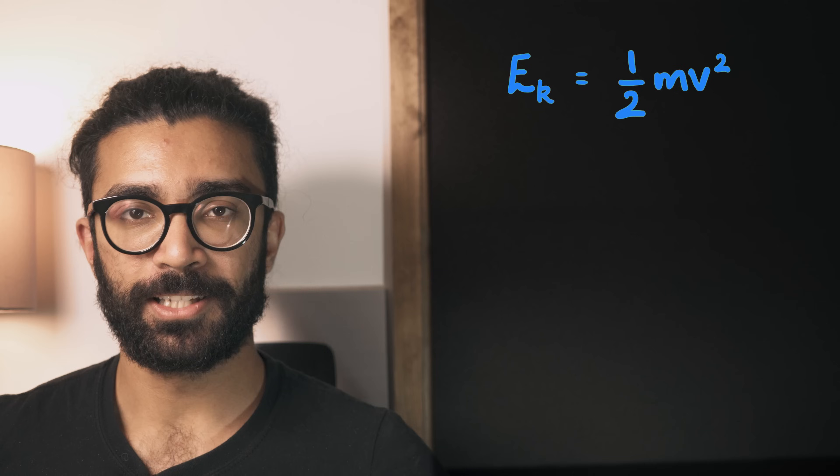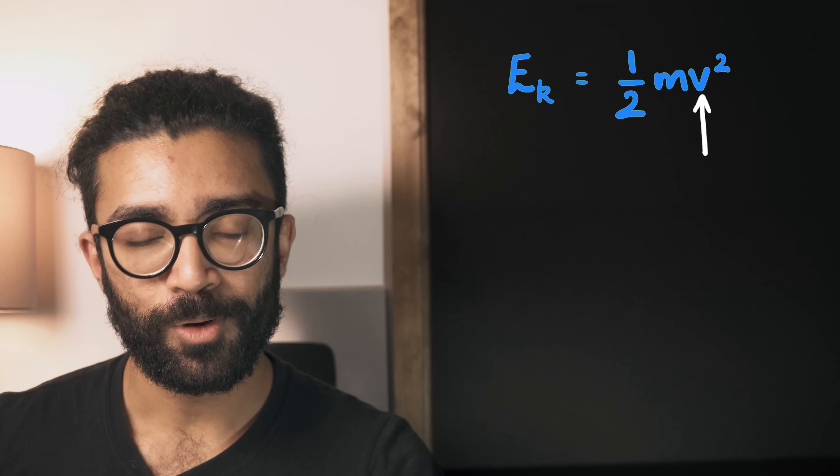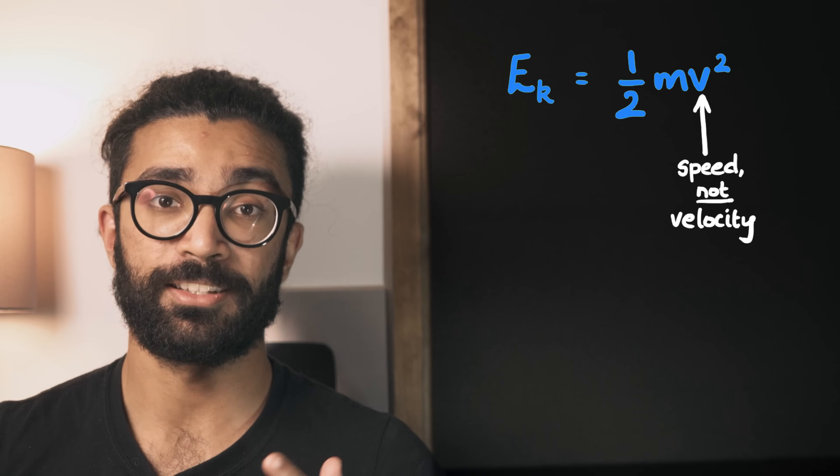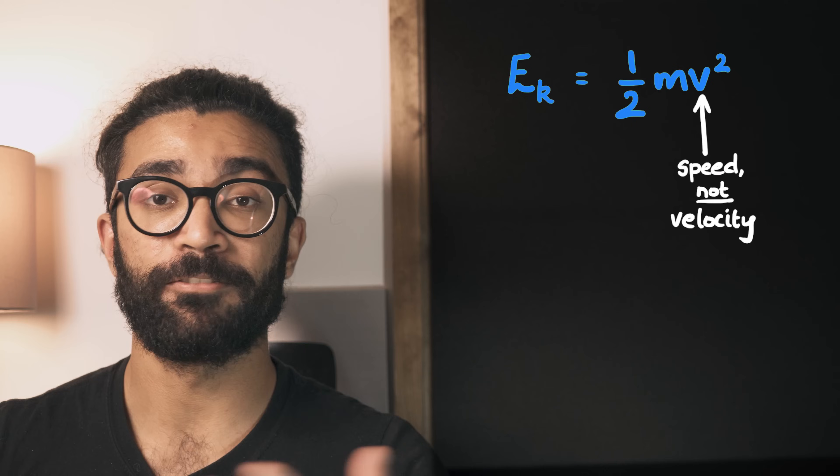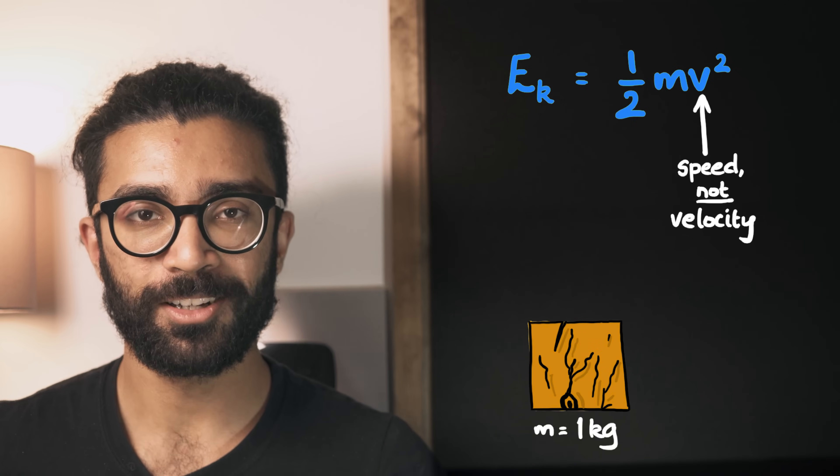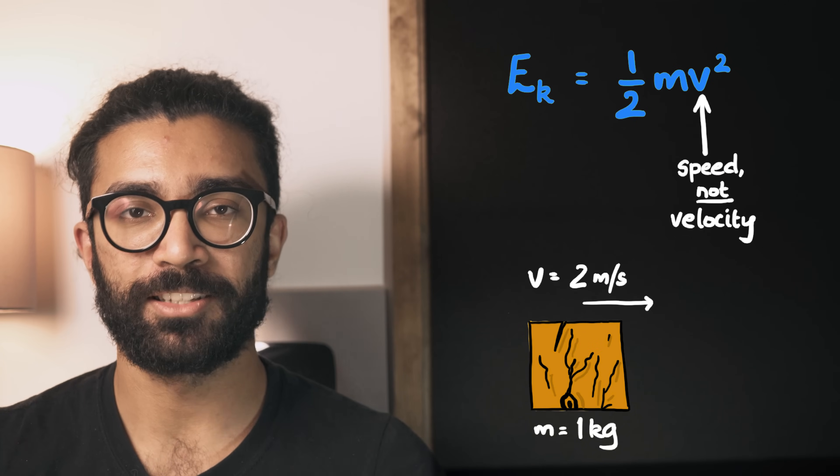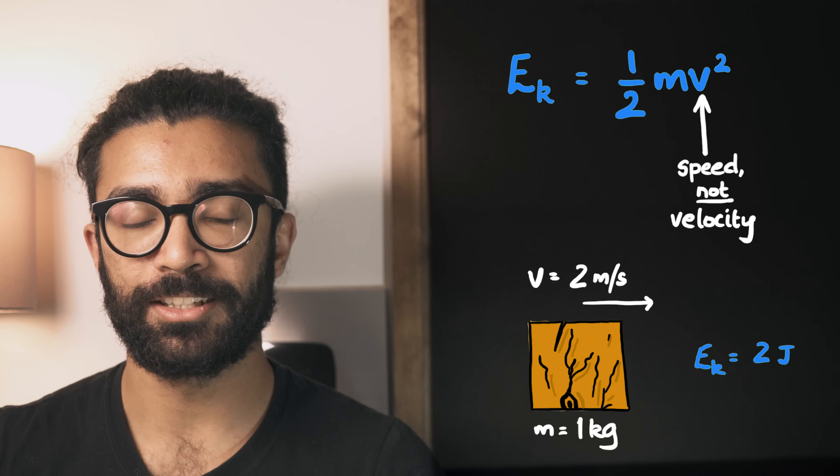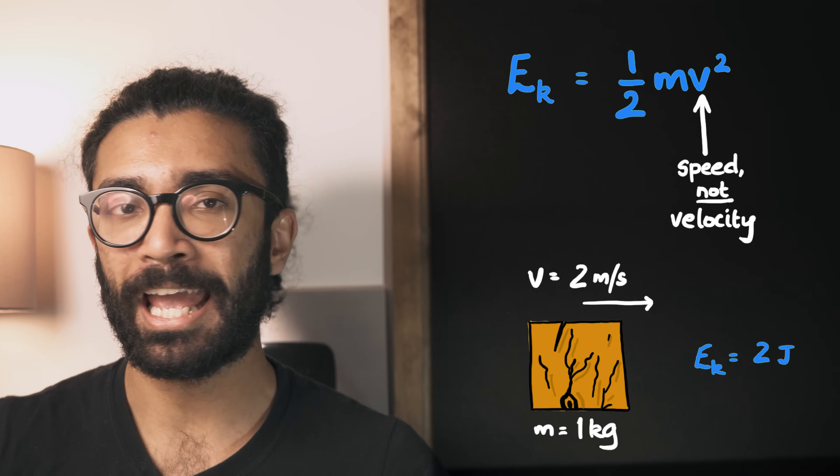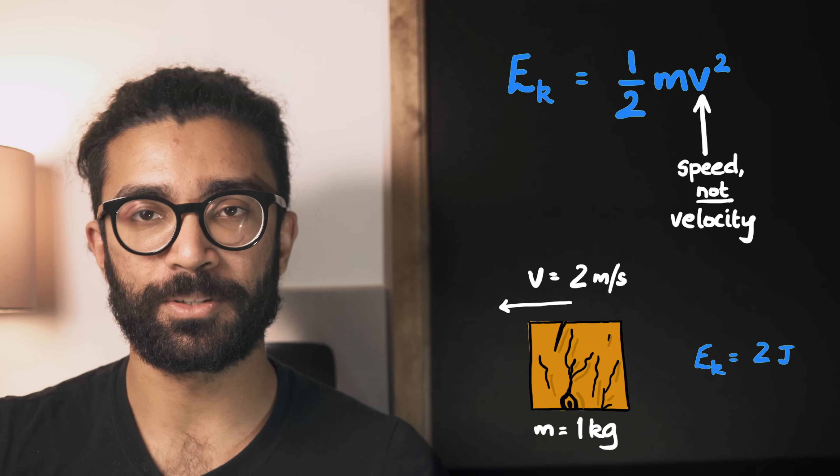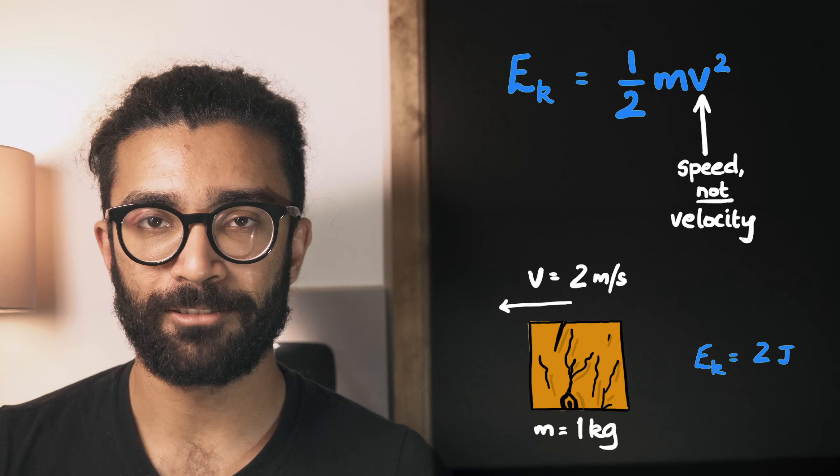Now there are a couple of things to note here. Firstly, that v represents the speed of the object, which is a scalar quantity, and not its velocity, which is a vector. In other words, our block moving in this direction at two meters per second has the same kinetic energy as the same block moving in any other direction at two meters per second. What matters is the speed, not the direction.